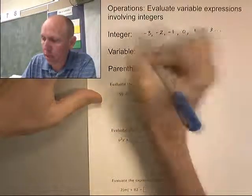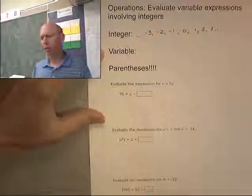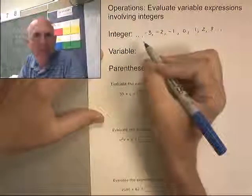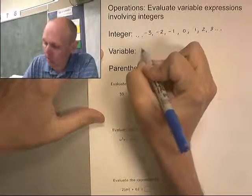A variable, a variable is a letter or a symbol that is used to represent a number.